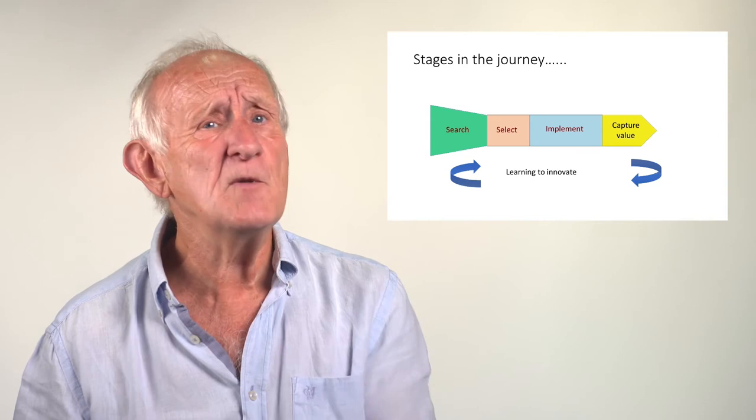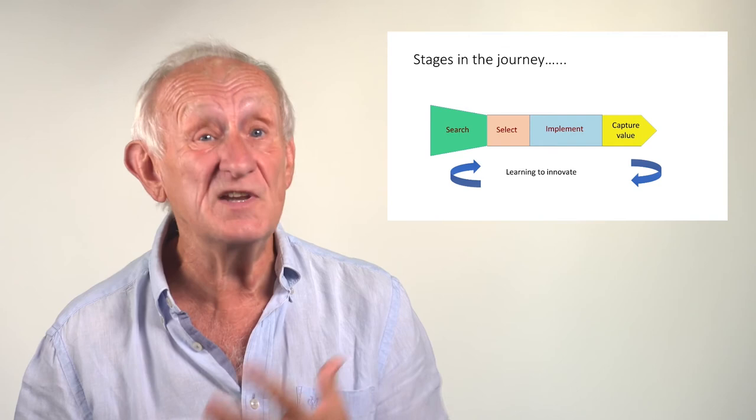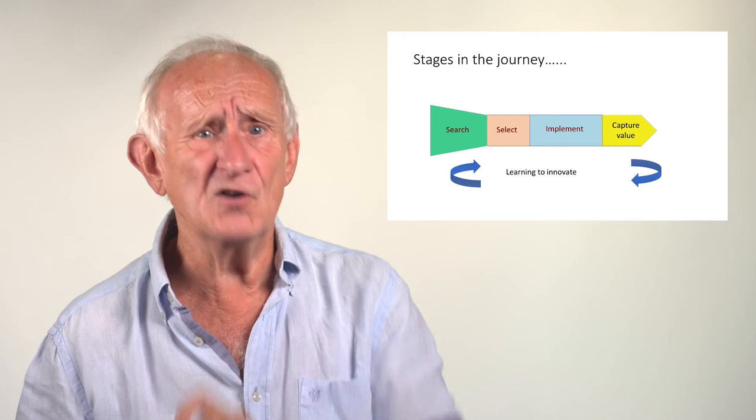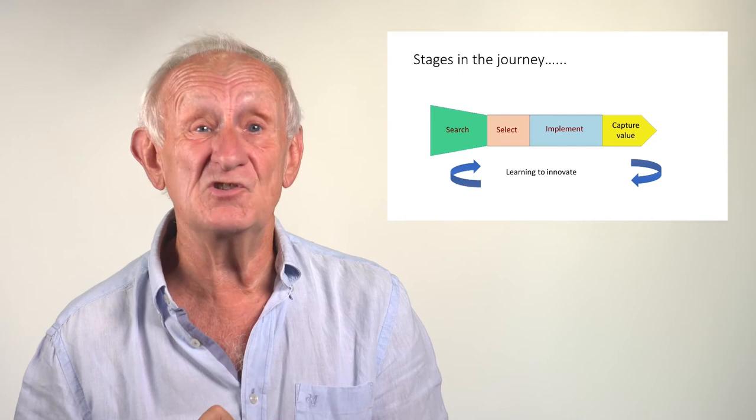It might come from the market. The market need pulling innovation through. It might be like our dear Mr. Spangler. His chest and his problems with sweeping the floor led him to create something, solving his own problem, which then solved a problem for others. It could be the government saying, you can't do that, or you must do that. And that shapes the way we have to innovate. In fact, what we know about innovation is it comes from many different directions, which means that the first part of our journey has to be searching for those opportunities.